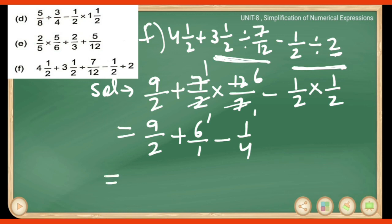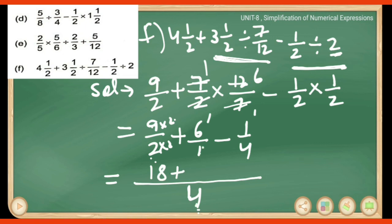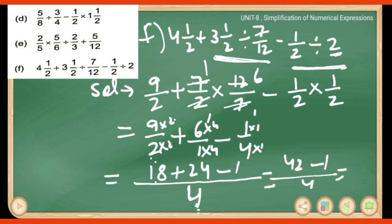Now taking LCM of 2, 1, and 4, the LCM is 4. Converting: 9/2 becomes 18/4 (multiply by 2), 6/1 becomes 24/4 (multiply by 4), and 1/4 stays as 1/4. So we have 18/4 plus 24/4 minus 1/4. Adding 18 and 24 gives 42, so it is 42/4 minus 1/4 = 41/4. Converting to mixed number: 4×10=40 with remainder 1, so the answer is 10 and 1/4.